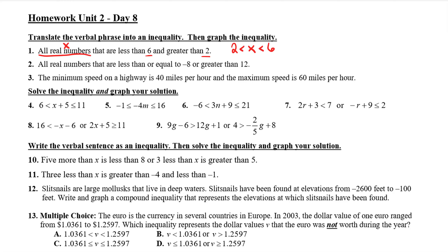Now some people get thrown off by the fact that this says 'greater than,' but I wrote a less than symbol and x is supposed to be greater than 2. But remember, this is like an alligator and the alligator is supposed to be eating the bigger number, and x is the bigger number. So even though it's a less than symbol, it means x is greater than 2. We kind of read it backwards from the inside out.